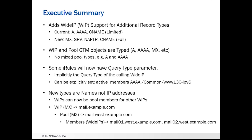If that query parameter is not included in the call to that particular iRule function, it's going to implicitly assume that it's a query type of the calling wide IP — whatever query type is associated with the wide IP, the iRule is going to assume that's what it is. You can still also explicitly set the query type. Here, I'm using the active members iRule command and explicitly telling it that it's a Quad A query type. So I may be coming in on an A type wide IP, but I can use active members to see what the Quad A pool's active members are.